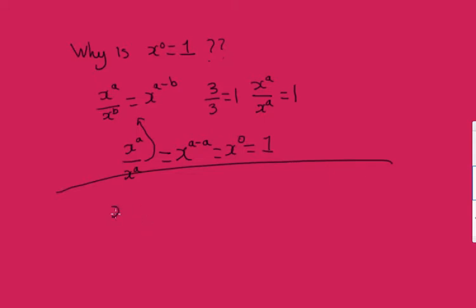x squared is x times x. x to the power four is x times x times x times x. x to the power one is just one x. x to the power zero...